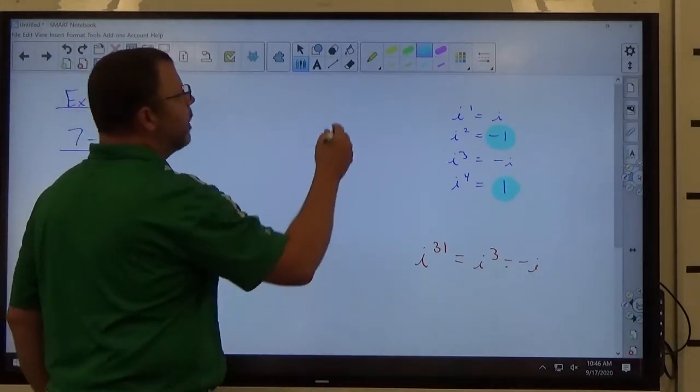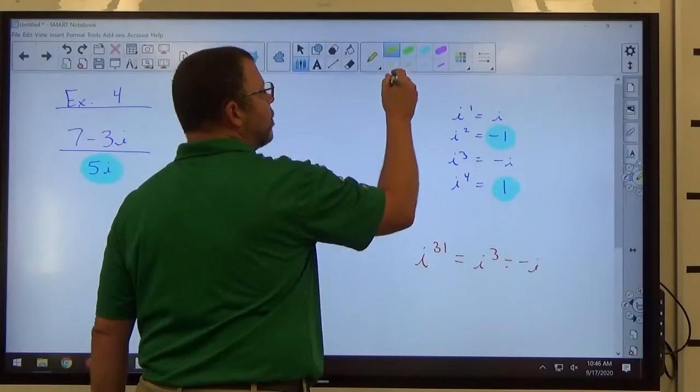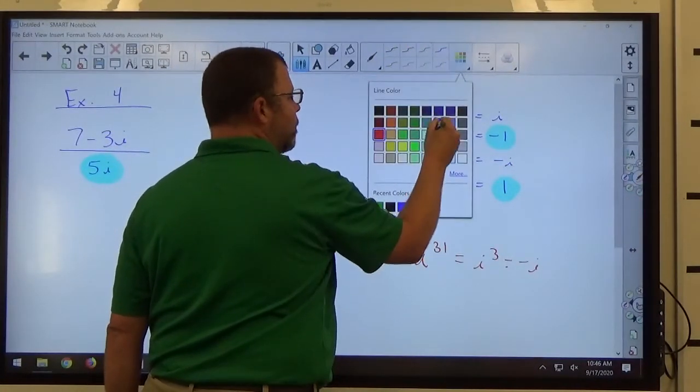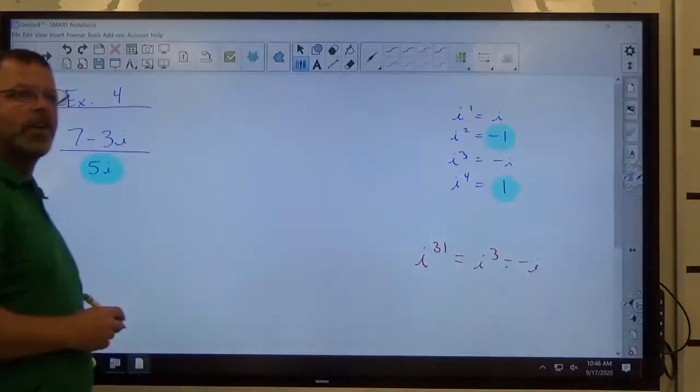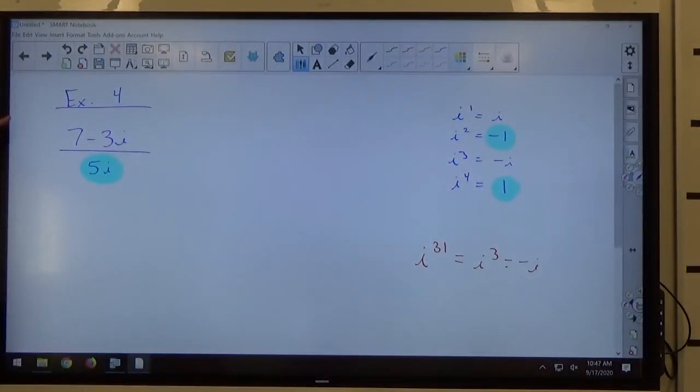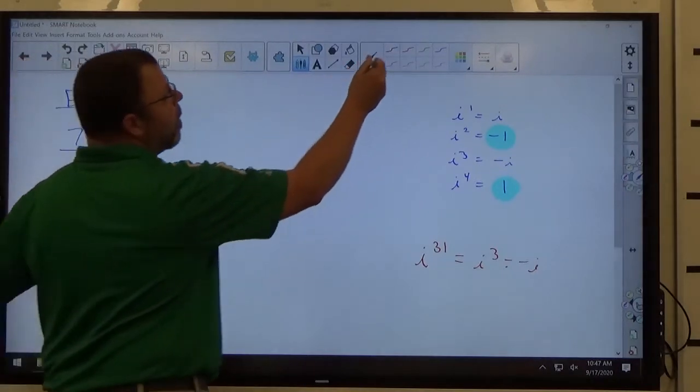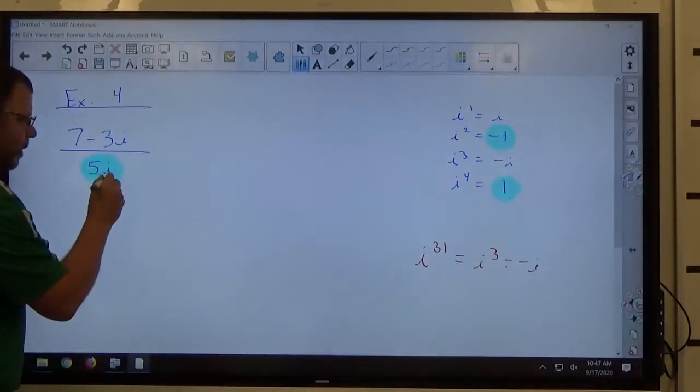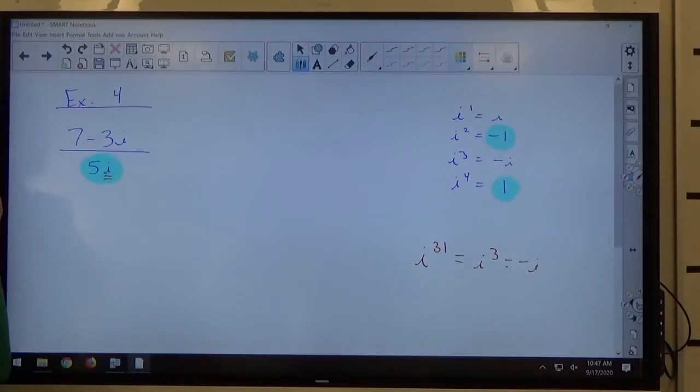So to do this, the technique involves what we're allowed to do to fractions. What you've learned about fractions since 5th grade, when you were starting to add and subtract fractions, is you're allowed to multiply the top and bottom of fractions by anything you feel like, any time you feel like it. In this case, our purpose, what's wrong with the problem, is the i in the denominator. I don't want that to be there.